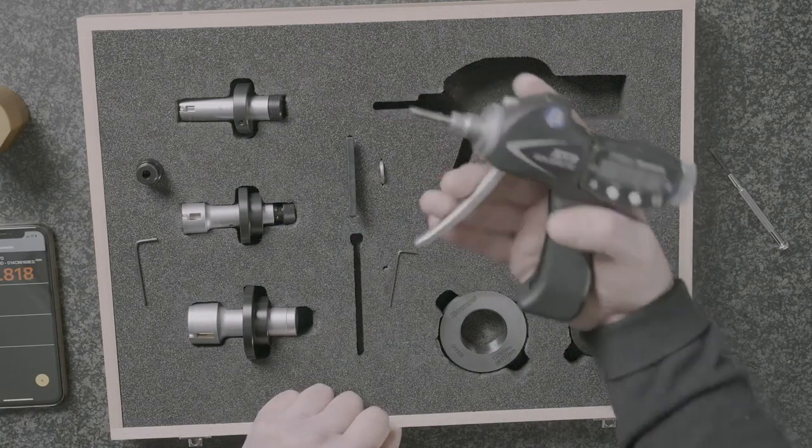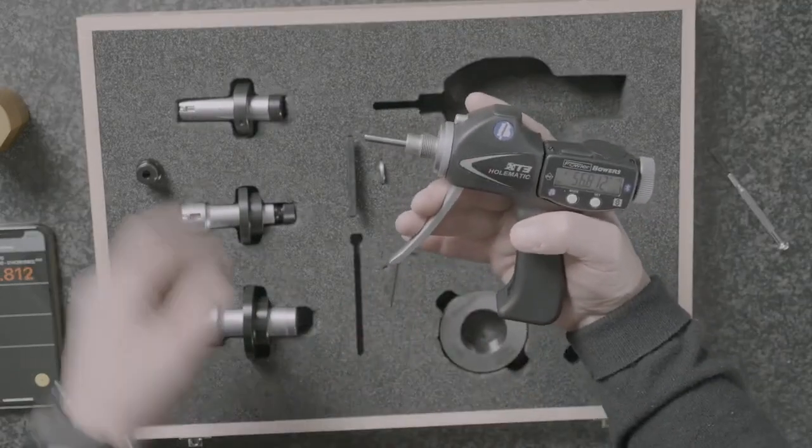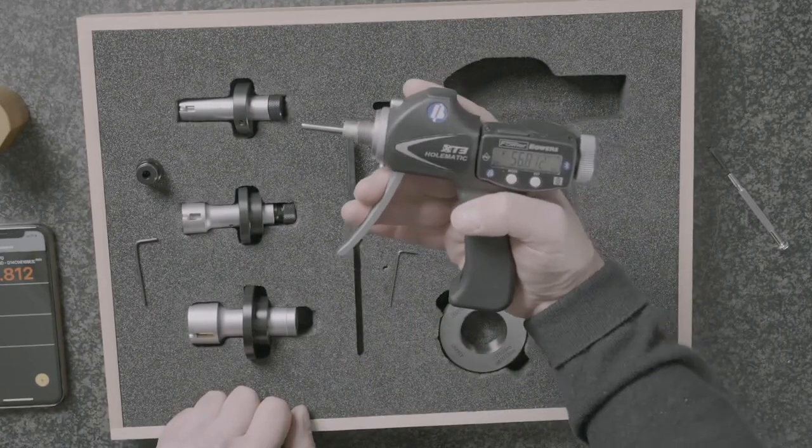It comes with the two setting rings just like a regular Bowers XT set and the all important XT3 Holematic pistol grip controller. This controller will work with any head from 3 quarters of an inch up to 4 inches or 20mm up to 100.